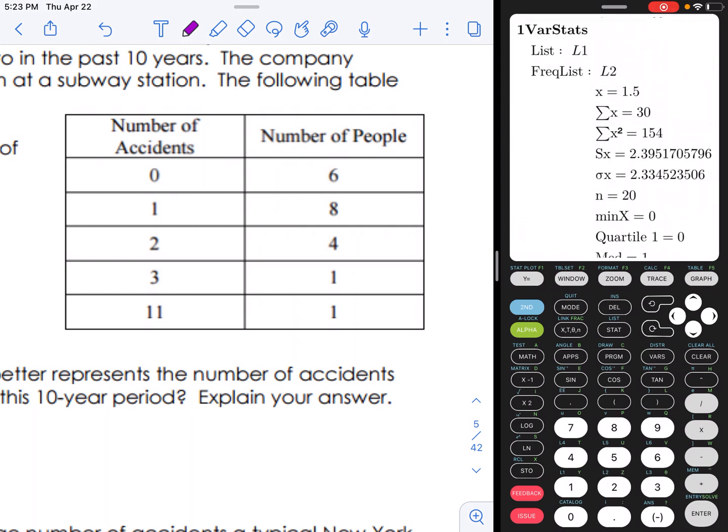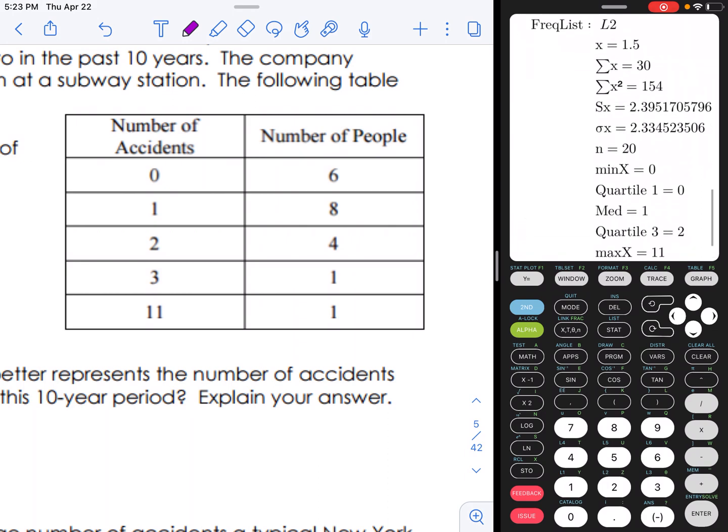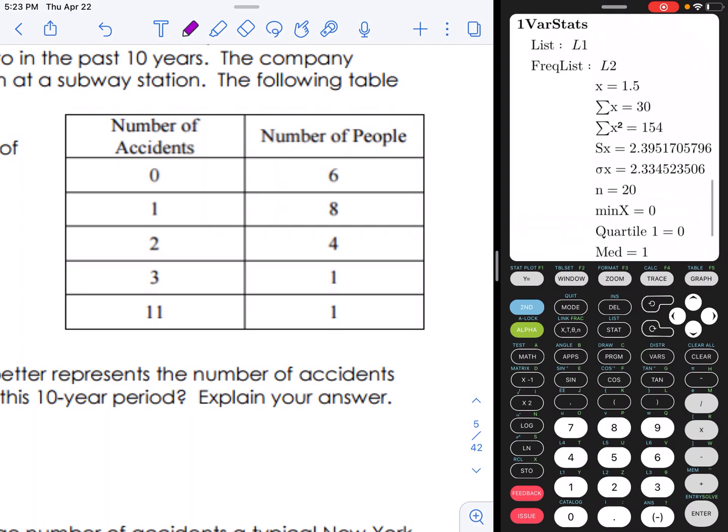Hit enter. And now it's going to compare all of that information from both parts of the table. And we have our mean. We have our median. We have our minimum quartiles. Whatever you need.